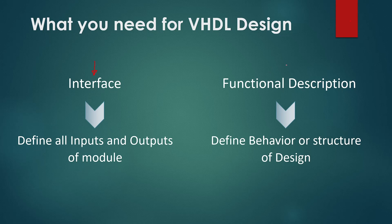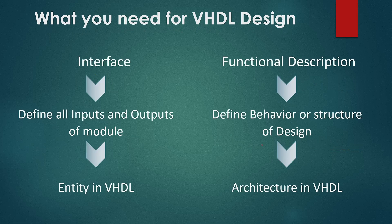The second item we need to define is the functionality of our digital system. In this section you will write VHDL code to define what you want to get from your digital system and how it will be achieved. This can be the behavior definition from sequential statements, or the structural design, or a set of concurrent statements. Once you complete these two basic needs you will have a complete VHDL design for your digital system.